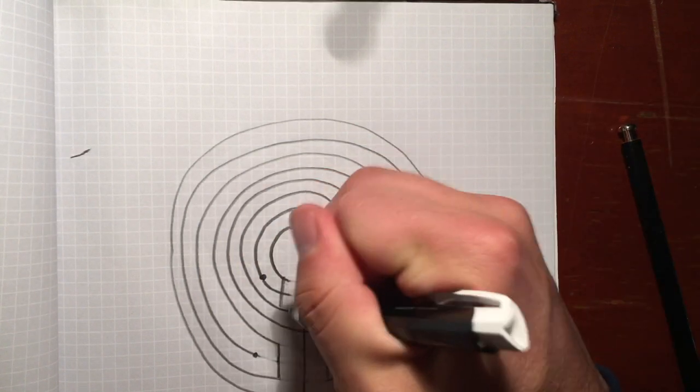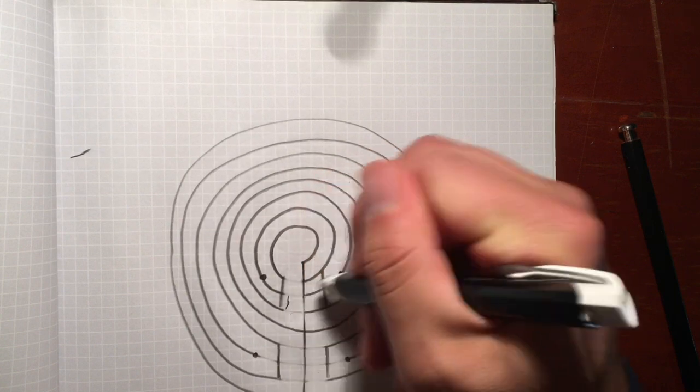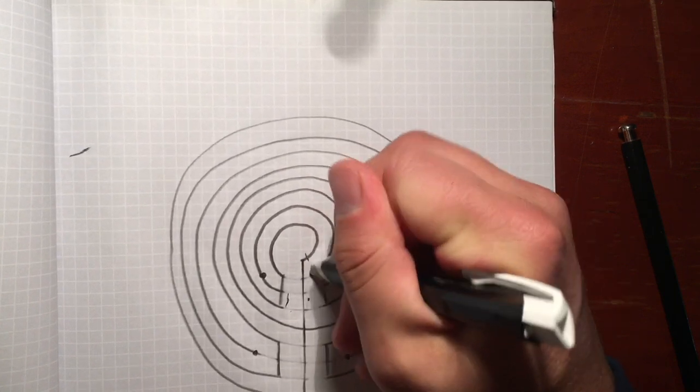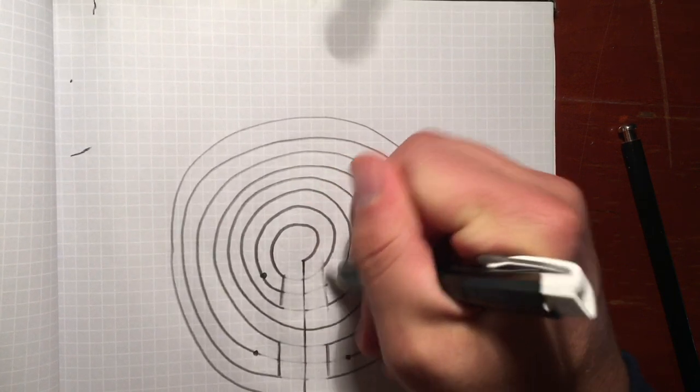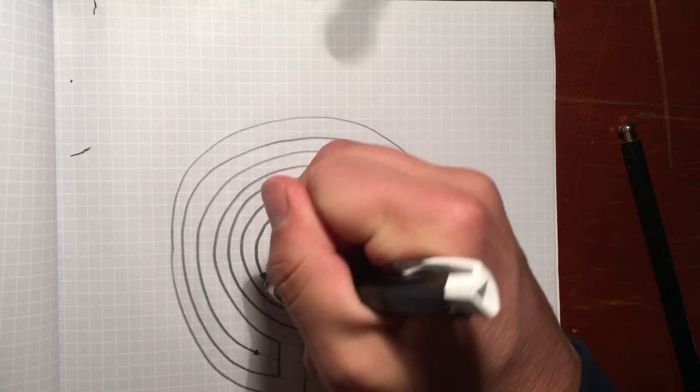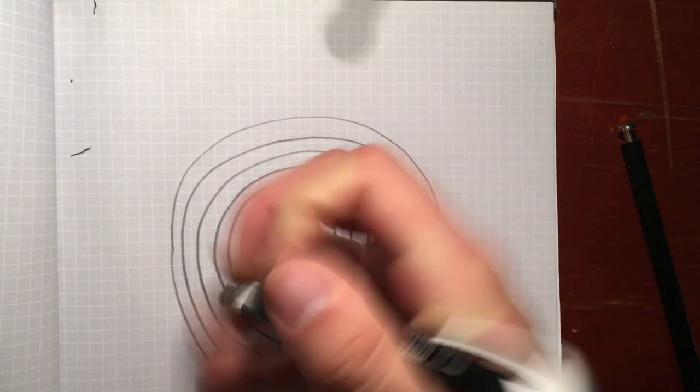Then you're going to erase these three that bring you into the center. Erase these three on the other side. And finally, these two line ends. And there you have it.